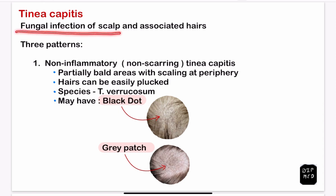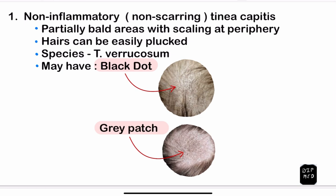Tinea capitis is fungal infection of the scalp and associated hairs. It presents in three patterns. The first is the non-inflammatory or non-scarring type. There are partially bald areas with scaling at the periphery. The hairs can be plucked easily without any pain — this is one of the classical features. This type is usually caused by Trichophyton verrucosum and may show black dots or grey patches.